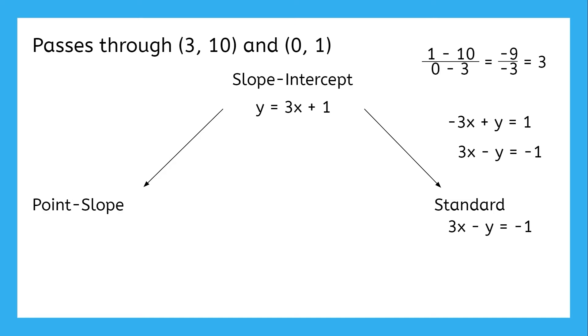For point-slope form, we just use the information we already know, which is the slope and any point, which can include the y-intercept. Then we simply plug those points into point-slope form, and we get that y minus one equals three times x minus zero.